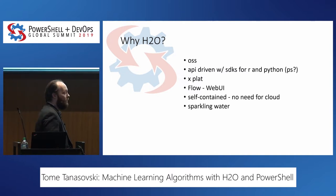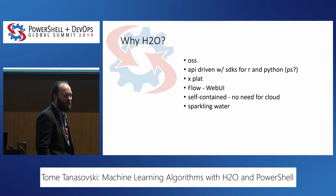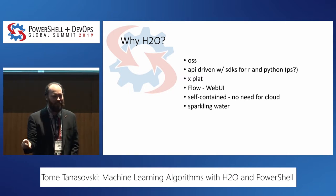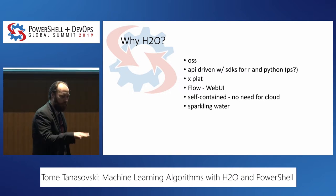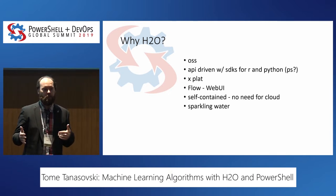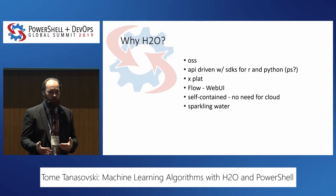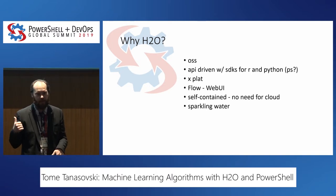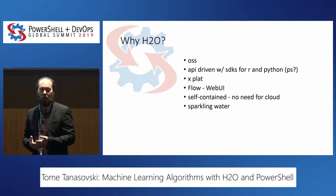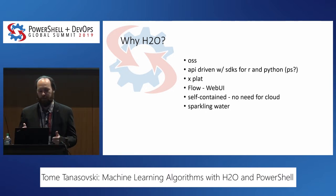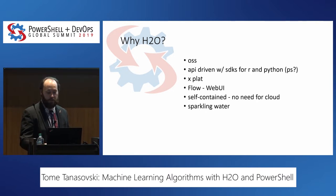The next super interesting thing is Sparkling Water. Sparkling Water is a combination of H2O and Spark. Spark is a distributed computing platform where you can have clusters of Spark instances. What Sparkling Water does is any algorithm you pick to train a data model on — if it can be done in a distributed fashion, it will leverage your Spark clusters to do so. I toyed with doing all my demos with Sparkling Water, but I only have my laptop, so we're doing single-instance H2O.